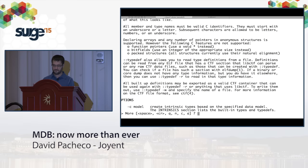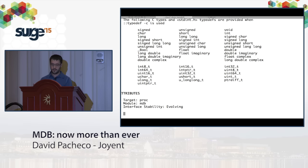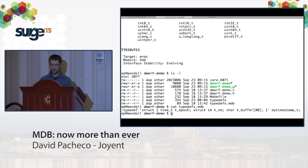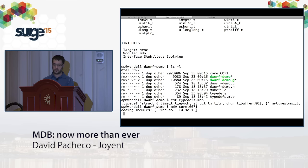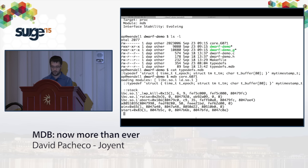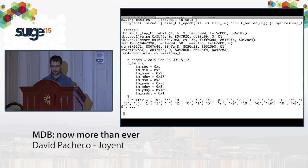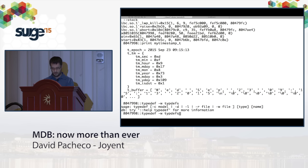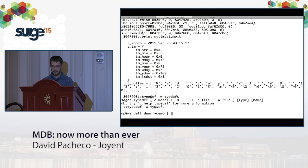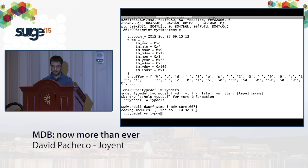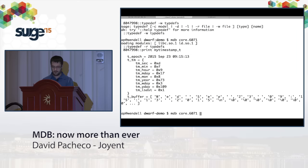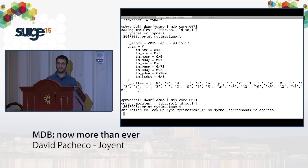There's also a ::typedef command that Robert added, useful when you don't have DWARF either. You manually define types inline in MDB, then use ::typedef -w to save them to a file and ::typedef -r to read them back in a new session. This is particularly useful when you're desperate for debugging information and willing to manually describe the structure layout. Once defined, ::print works with those types just as it would with CTF.